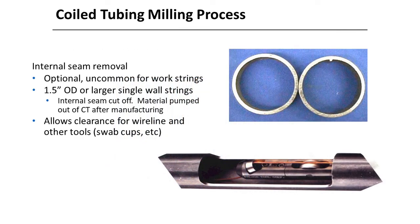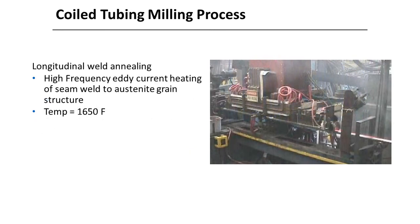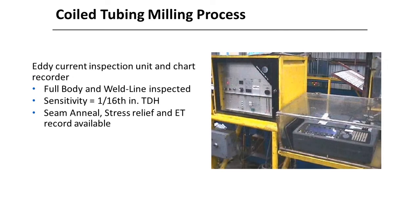Removing the internal seam weld is optional and not common for standard work strings; it is used for permanent installations such as production tubing. For longitudinal weld annealing, high-frequency eddy current heating of the seam weld achieves an austenite grain structure at around 1650 degrees Fahrenheit. If eddy current inspection detects a problem, the pipe is automatically marked with paint but the milling process continues; the pipe is then later inspected to analyze the detection area.